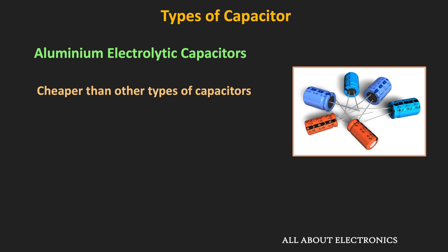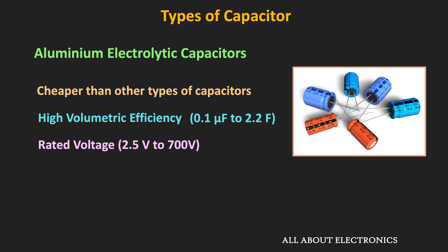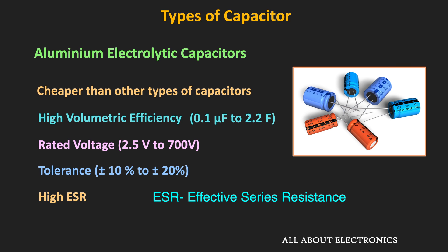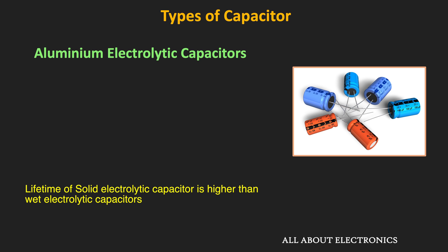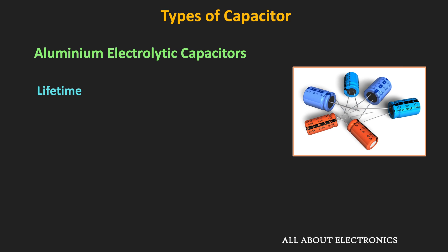Aluminum capacitors are much cheaper than other types and are available in a wide voltage range. However, they are not used in precision applications because they have very large tolerance. The ESR of these capacitors is higher than other types, so power dissipation is also higher. The lifetime of this wet electrolytic capacitor is lower, and it has a higher leakage current than ceramic and film capacitors. Since they are polarized, they are typically used in DC applications.